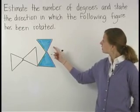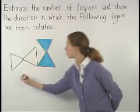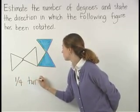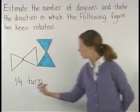So here, we can see that the shaded figure has been turned one quarter turn. Remember that a quarter turn is a 90 degree rotation.